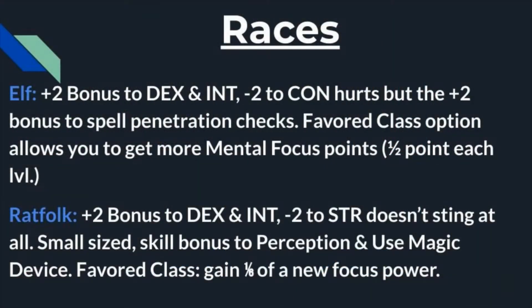One of the first races that's going to be incredibly useful for this build is the Elf. Elves get a plus two bonus to both dexterity and intelligence. The minus two to constitution hurts, but the plus two bonus to spell penetration checks will help make up for that. Their favored class option allows you to gain more mental focus points at a half point per level, which is massively important and something you very much want in order to activate different abilities.